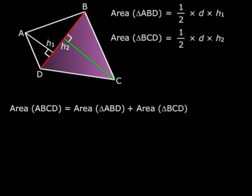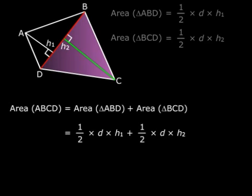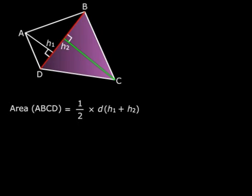And let's combine these two and get the area of the quadrilateral. So, that becomes half into D into H1 plus half into D into H2. Let's take half into D common there. So, the area of the quadrilateral ABCD, that is half into D into H1 plus H2.